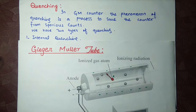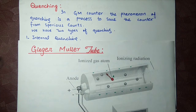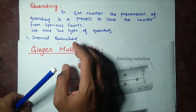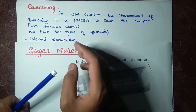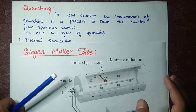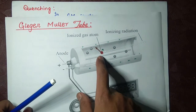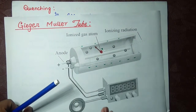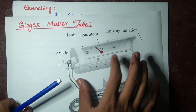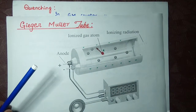In a GM counter, the phenomenon of quenching is a process to save the counter from spurious counts. A spurious count is a sharp increase in count when an electron — as you can see in the figure — when this electron, as I told you in my previous lecture...